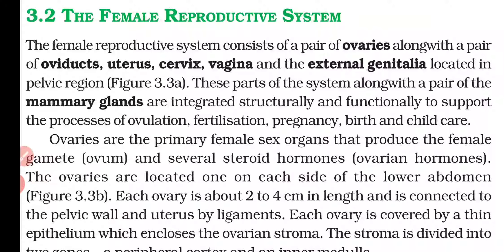All these parts are present in the pelvic region, and along with these parts the mammary gland is also there, which structurally and functionally supports the processes of ovulation, fertilization, pregnancy, birth, and childcare. These are the important parts of the female reproductive system.